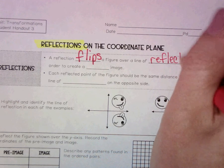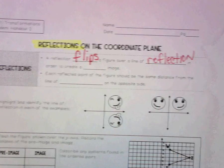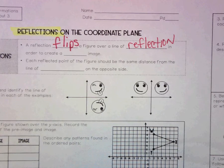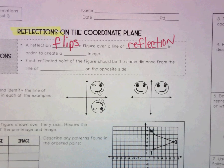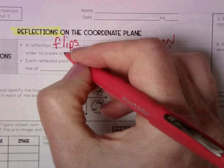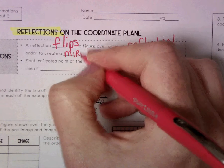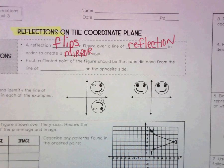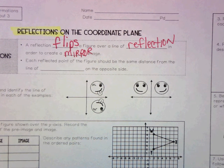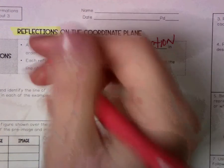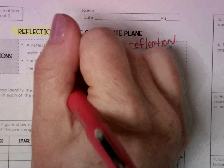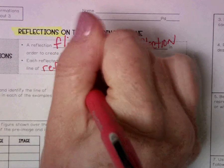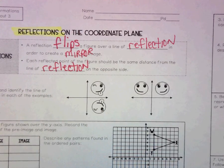We're going to be reflecting over the x and y axis this year. The reason we reflect it is we're trying to create a mirror image. It flips a figure over a line of reflection in order to create a mirror image. Each reflected point should be the same distance from the line of reflection, but on the opposite side.